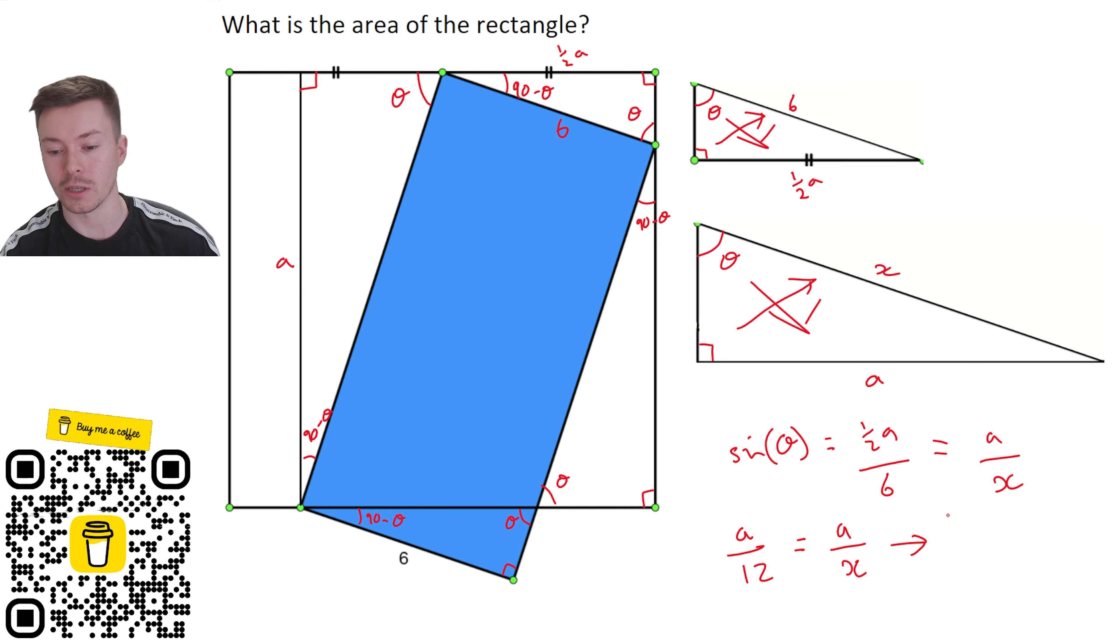So 12 must be equal to x. If you don't believe me you can cross multiply here and you can cancel the a's and you will get that x is equal to 12.